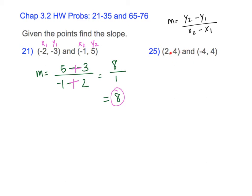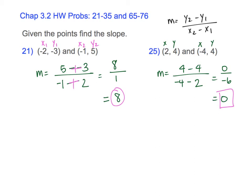In this next one I have two more points — x, y, x, y. It doesn't matter which point I subtract first, as long as I do the same order for the x's. So 4 minus 4 over negative 4 minus 2: the top is 0 divided by negative 6. If the top is 0, I get 0. So my slope is 0.